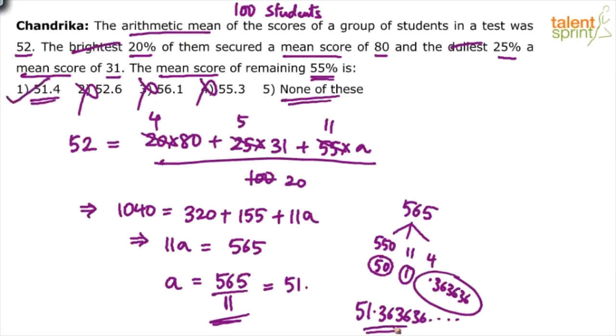So I think the answer comes out to be option 1 because 51.3636 up to infinity is actually 51.4 right. So option 1 is the answer, 51.4 is the answer.